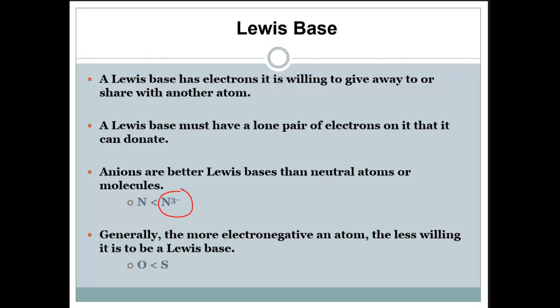So the fact that it has a 3 minus here makes it a better Lewis base. Generally also, the more electronegative an atom, the less willing it is to be a Lewis base. So oxygen is less willing than sulfur because he wants to hold on to his electrons.